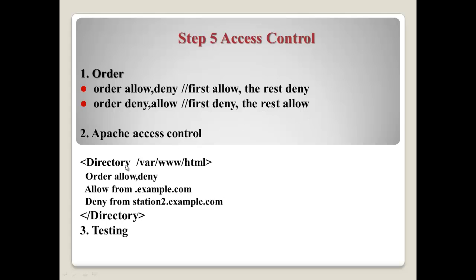For example, number two: /var/www/html — this is a directory name. So here there is access control: order allow deny, and allow from example.com, deny from station2.example. In this case, the hosts using the domain example.com will be allowed to access this directory, but only station2.example.com will be denied access.